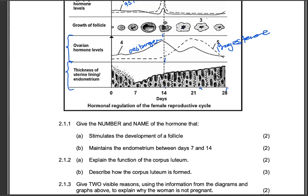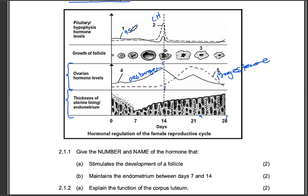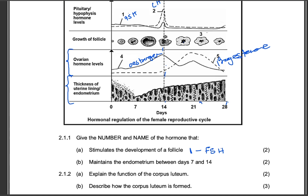Question 2.1.1: Give the number and name of the hormone that stimulates the development of the follicle. From the graph, the number is one, and the name is follicle stimulating hormone — you can just write FSH and you'll get the mark.